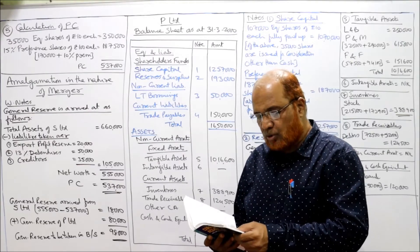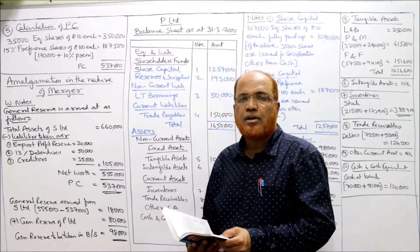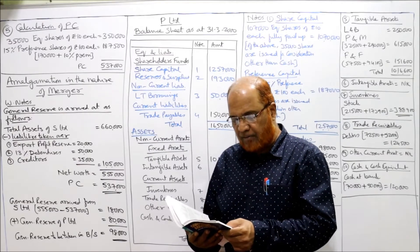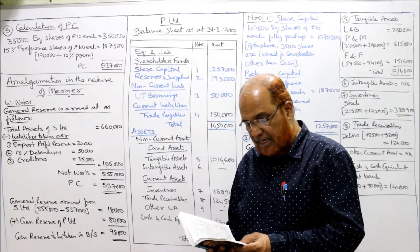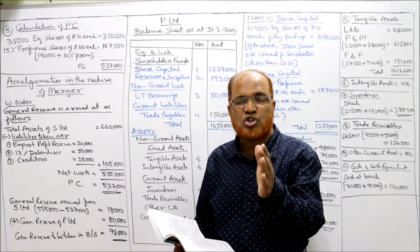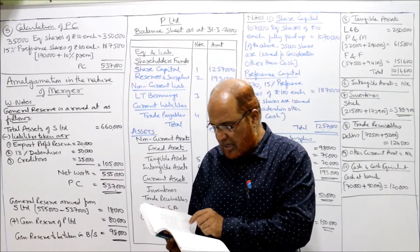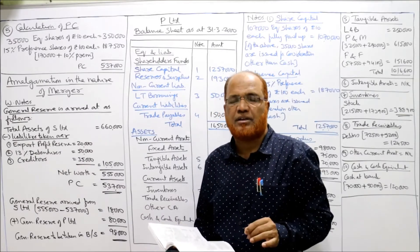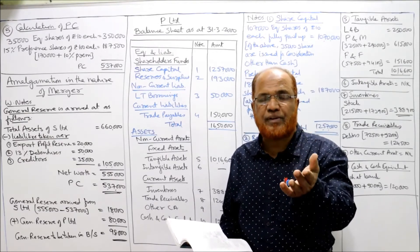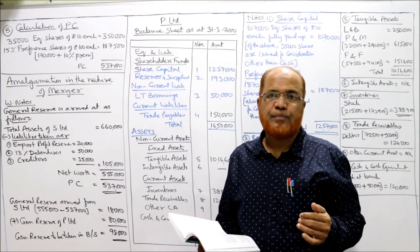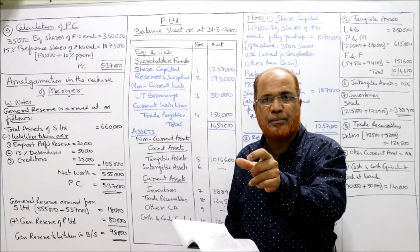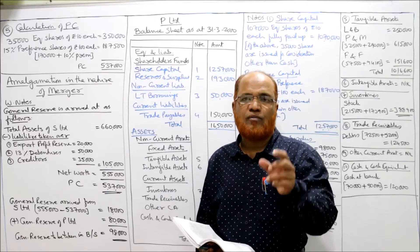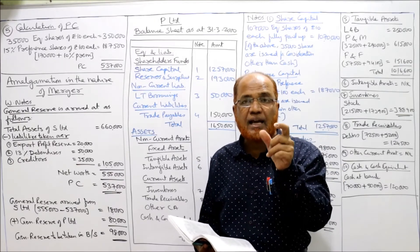The purchase consideration is as follows: 35,000 fully paid equity shares of ₹10 each at par are issued to the equity shareholders of S Limited — that is ₹3,50,000. Then, fully paid 15% preference shares of ₹100 each are issued to discharge the preference shares of S Limited at a premium of 10%. The preference share capital in S Limited is ₹1,70,000, so ₹1,70,000 plus ₹17,000 premium equals ₹1,87,000.